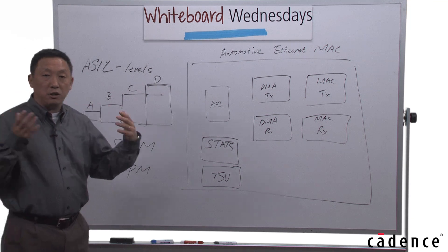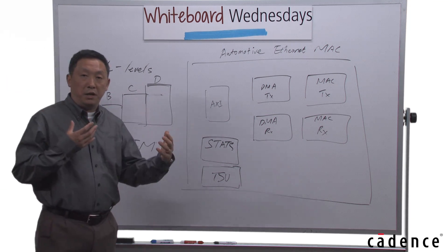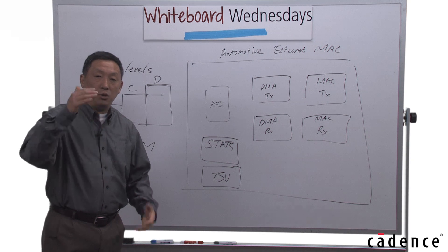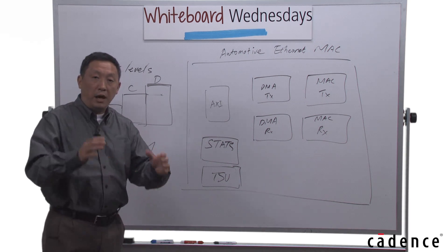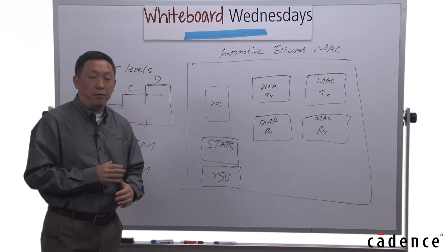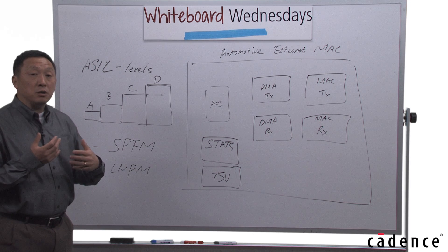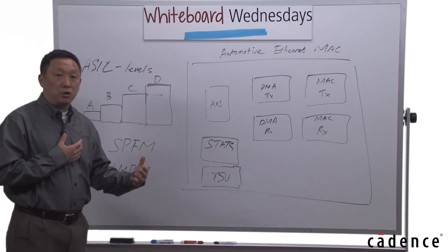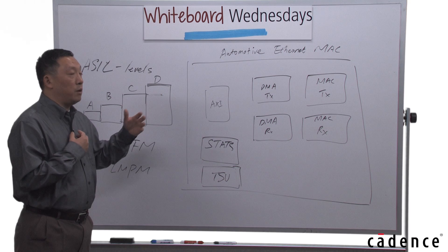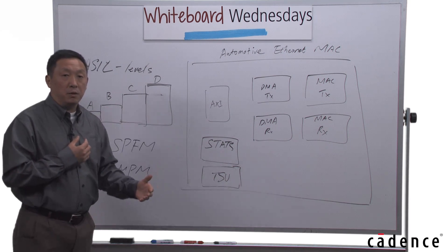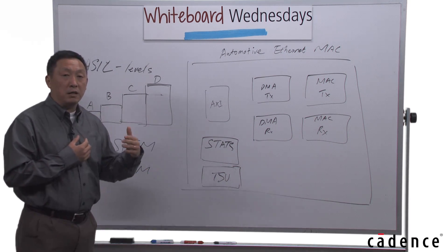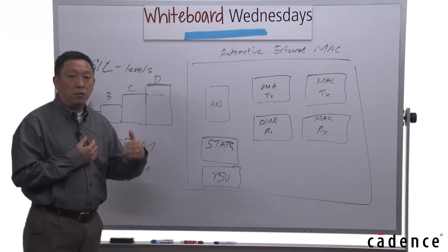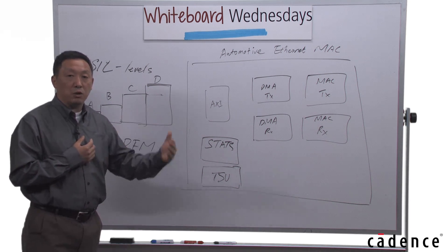Even though the ISO 26262 standard is a system standard, the requirement actually trickles down to the semiconductor components and to the IP level. For IPs, we are actually evaluating according to the ISO 26262 standard for multiple types of analysis. One analysis deals with random failures called FMEDA, which is something I'd like to talk more about today.